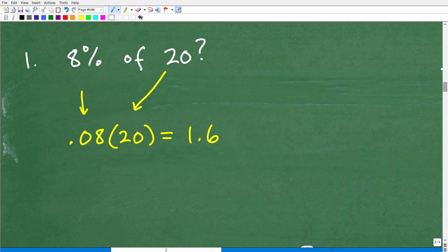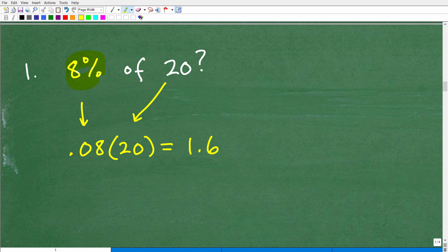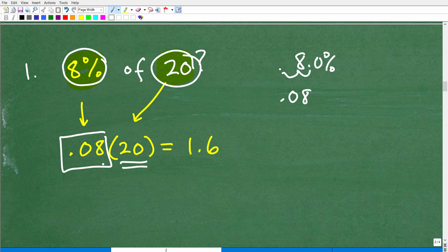All right, so number 1, 8% of 20. So when we want to find the percent of a number, it is super easy. The procedure is we're going to take that percent and convert it to a decimal. So here, 8.0%. We're just going to move that decimal point over two places to the left, so it's 0.08. So what we do is we change the percent to a decimal and multiply by the number that we're trying to find a percent of. So 0.08 times 20. We can go into our calculators. It is 1.6.